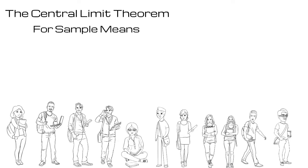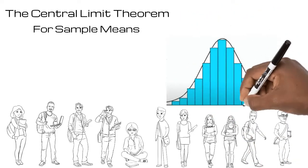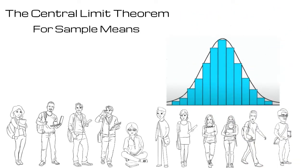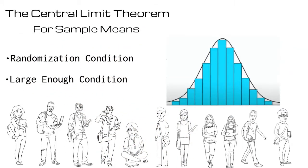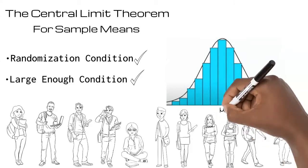The good news is that if certain conditions are met, our means will be normally distributed. First, check for the randomization condition. This means that all samples must be randomized. Then check the large enough condition. While there is no specific cutoff, the sample size should be large enough. If both conditions are met, when we create a histogram with our means, they will be normally distributed, and our actual mean will be at the center.